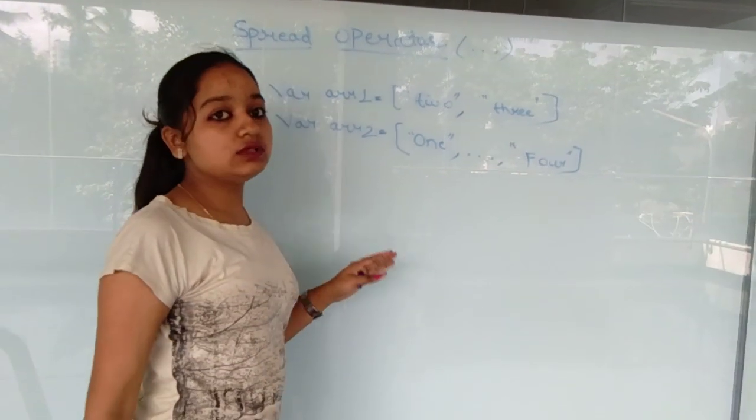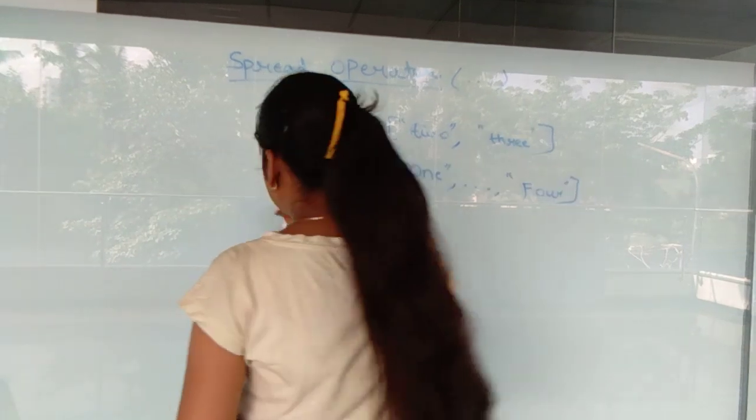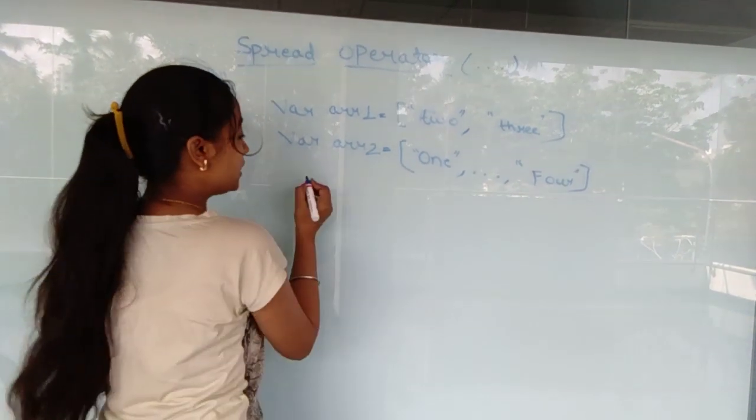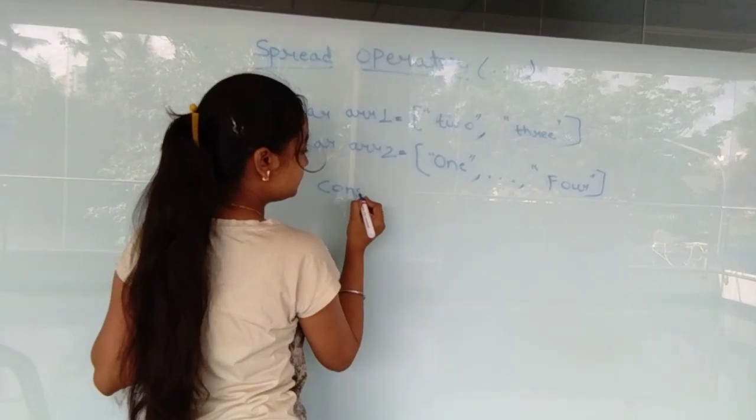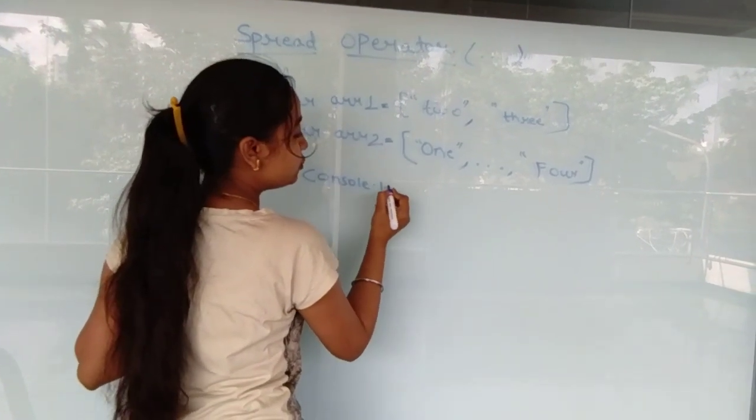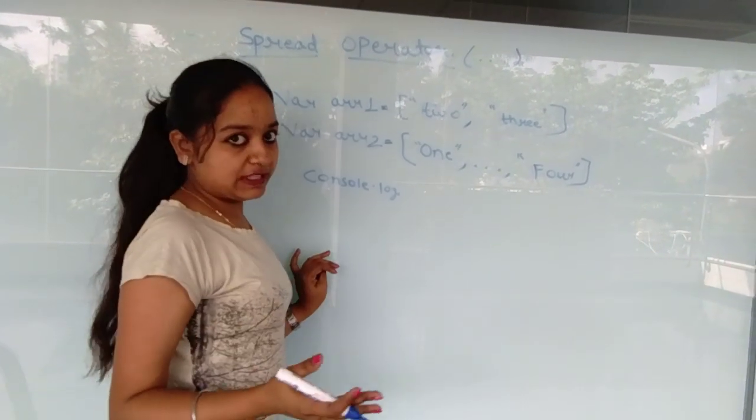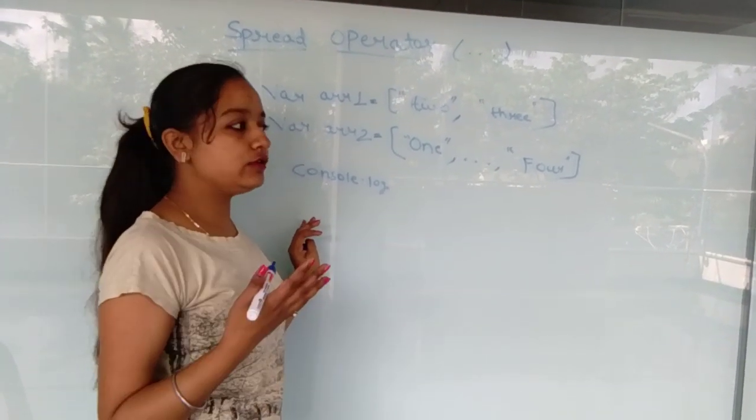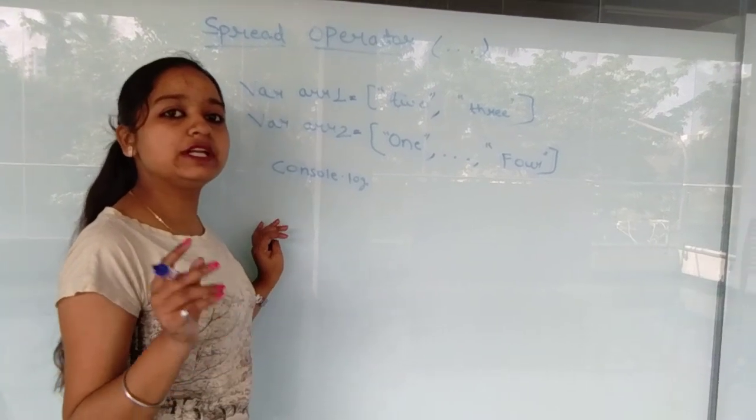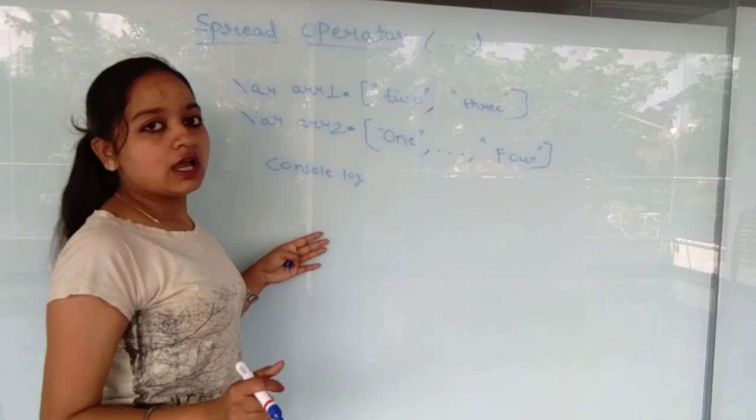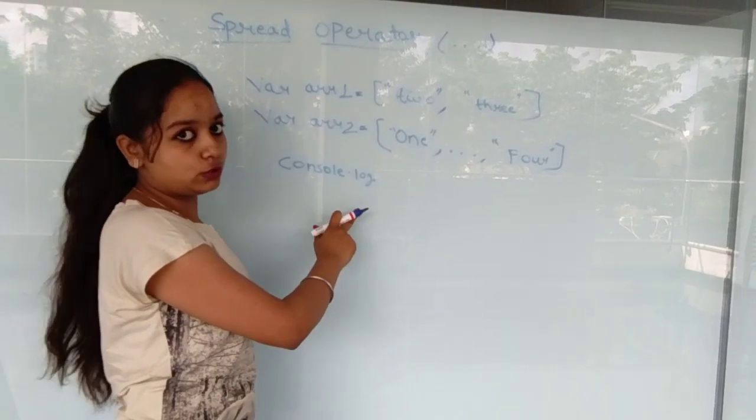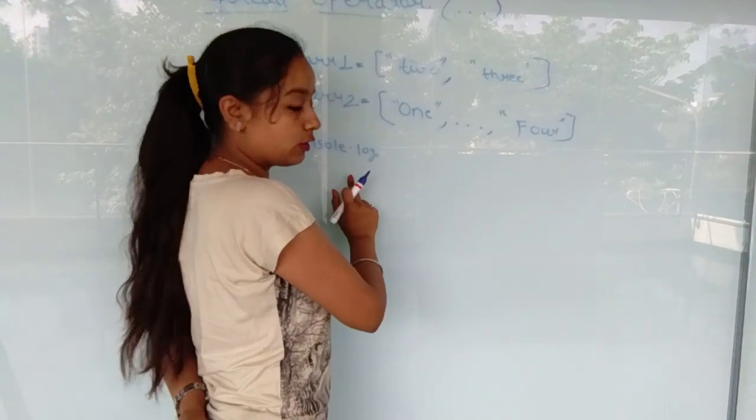Now see how the spread operator works. Here we have to print this, so we will use console. For printing purposes we should use any output pattern. If we use console.log, it should be printed in the console, and if we use document.write, it should be printed in the browser. So here for simplification we are using console.log to check the output.